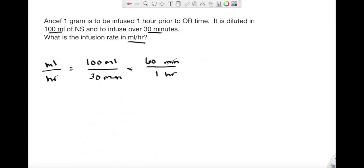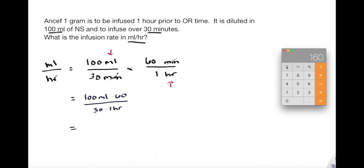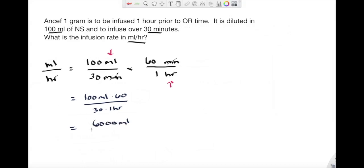Just like our last question, I need to convert minutes to hours. So I know that there are 60 minutes in every hour. I'm going to add this into my conversion and cross off my minutes, and I'll be able to solve. So this leaves us 100 mLs times 60 divided by 30 times one hour. Bringing up the calculator, you can see this is 6,000 mLs divided by 30 hours. And completing this calculation, this rounds out to 200 mLs per hour.